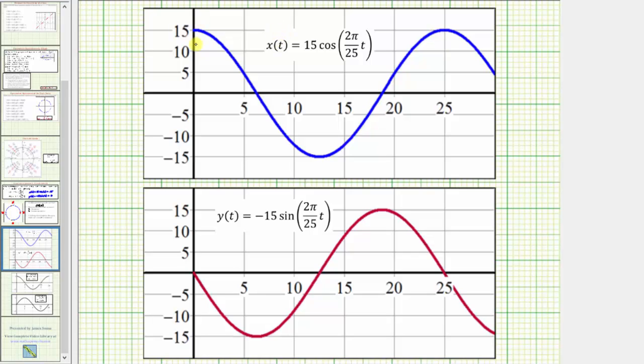But because x of t is on the vertical axis, which controls the direction east and west, let's label the positive vertical axis east and the negative vertical axis west. And of course the horizontal axis would be the input variable t for time in minutes.